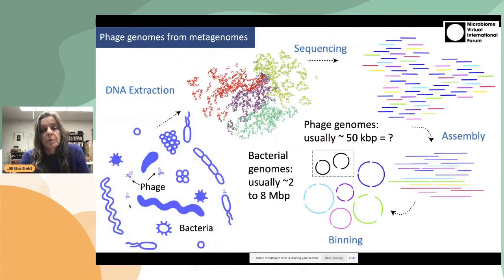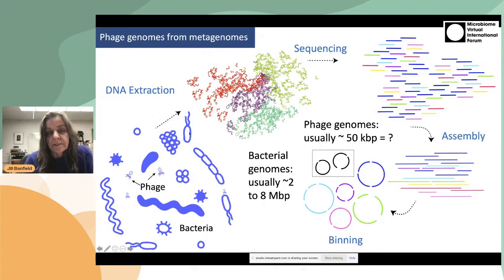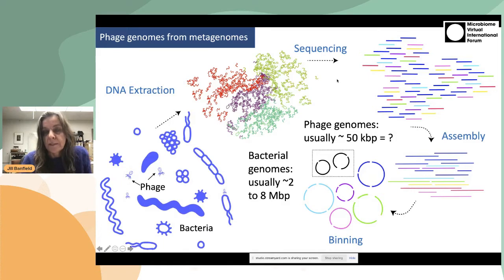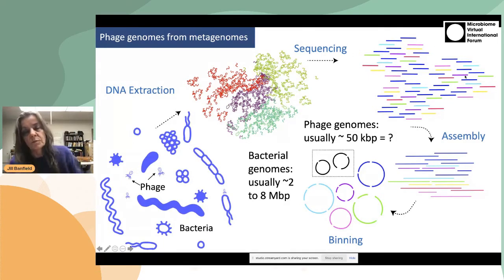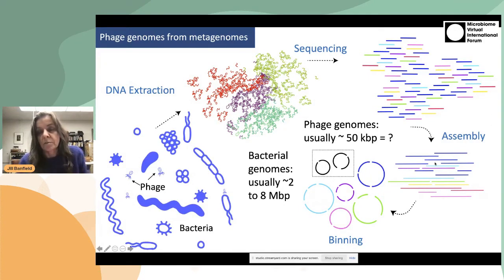Let me introduce this approach. On the left-hand side is a representation of a microbial community with many different organism types and, of course, phages. We extract the DNA from all of these entities. We sequence it using short read sequencing for the most part. These reads are assembled into contiguous DNA sequences — contigs — and then the contigs that belong to the same genome are assigned to the same bin to comprise a draft genome.